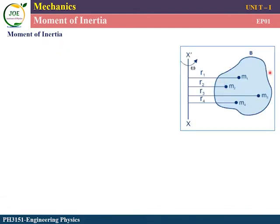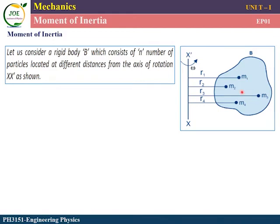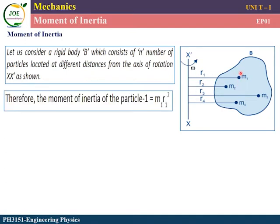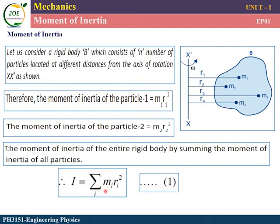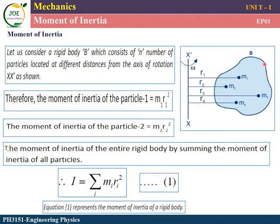For moment of inertia in a circular path, consider one object with n number of particles. For a particle of mass m1 at distance r1 from the axis, the moment of inertia is m1 into r1 squared. If a particle has mass m2 at distance r2, moment of inertia is m2 into r2 squared. For the entire system, I equals summation of mi ri squared.